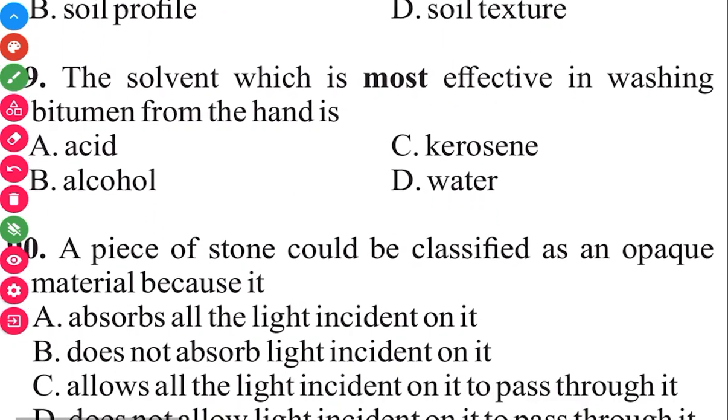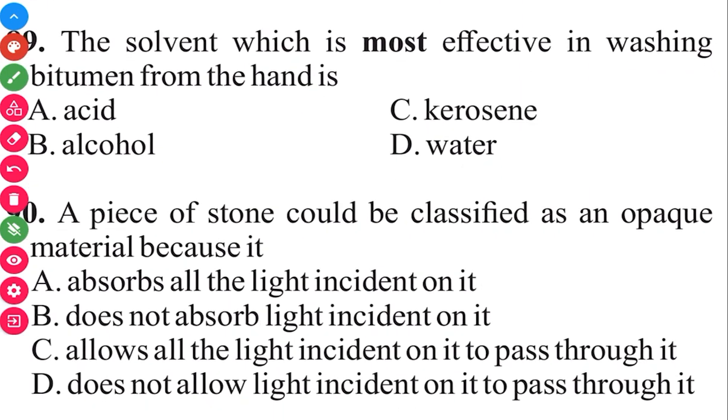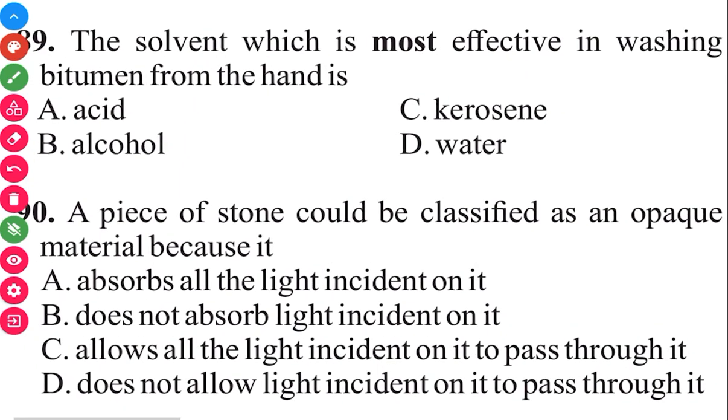Question 90. A piece of stone could be classified as an opaque material because it does not allow light incident on it to pass through it. Question 90 in 3, 2, 1 is D. It does not allow incident light to pass through it.